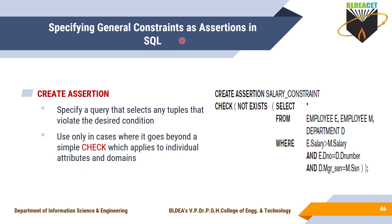Specifying general constraints as assertions in SQL: CREATE ASSERTION is the statement used to specify the constraints. This is one example which is used to specify a query that selects any tuples that violate the desired condition. Here, CREATE ASSERTION is the statement and you can give a name to the assertion — for example, the name SALARY_CONSTRAINT — and CHECK NOT EXISTS.